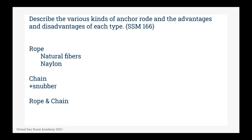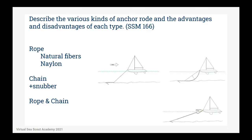Anchor rodes are what connect the anchor to the vessel, and these can be made out of rope or chain. Rope was traditionally made out of natural fibers such as Manila, until around World War II when nylon fibers became available. The benefits of rope are that it's very cheap, easy to handle, and can withstand shock. However, rope is also easy to wear. Chain rodes are much heavier and should really only be used for larger vessels. Notice how the weight of the rode sags down to the bottom — this actually aids anchoring, since we pull horizontally.